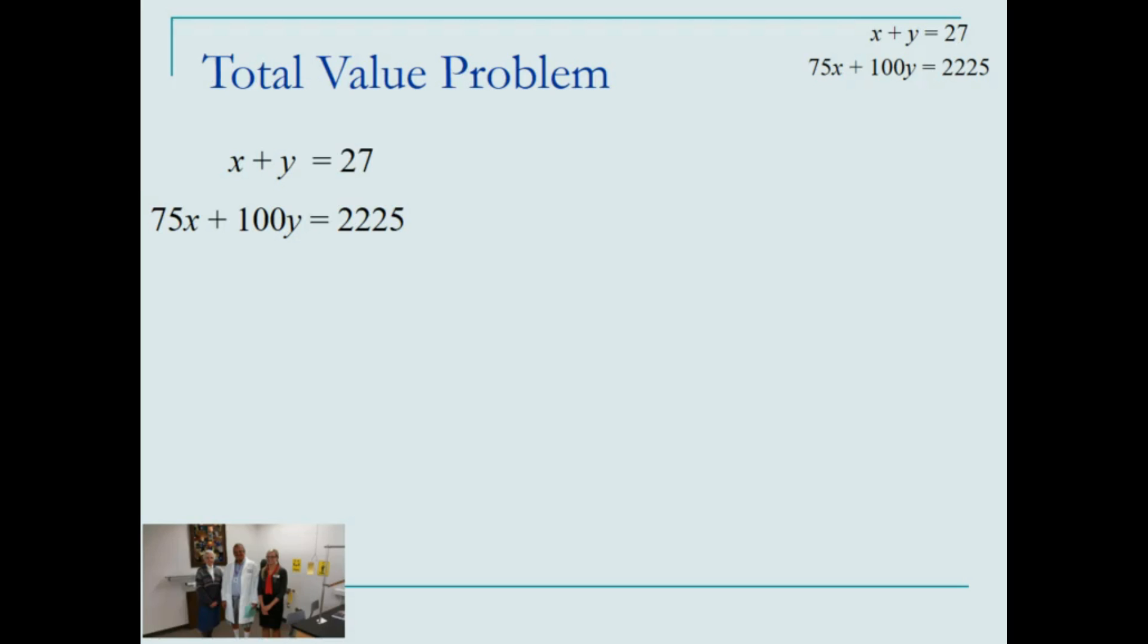To accomplish that, we'll use multiplication property of equality by multiplying each and every term in the first equation by negative 75. Using distributive property, we have the following equivalent to our first equation, and now we're set up to add the two equations together.